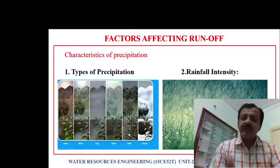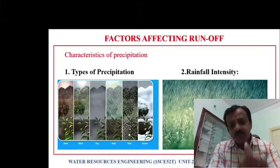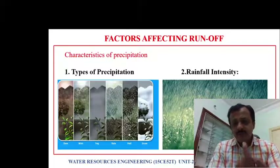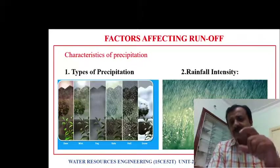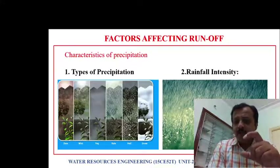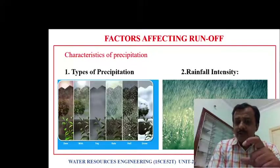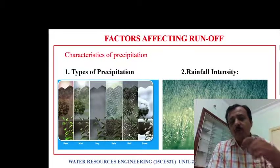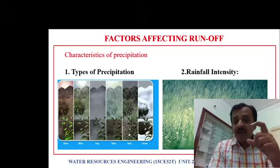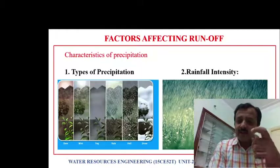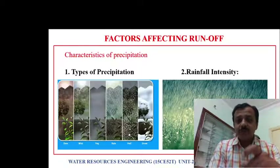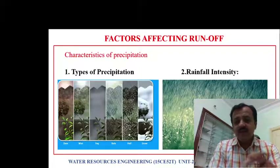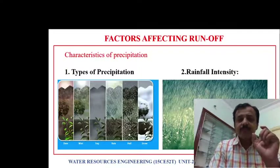Next is rainfall intensity — the depth of rainfall per unit duration, for example how much depth of rainfall occurs in one hour. More the rainfall intensity, more will be the runoff. Less the rainfall intensity, less will be the runoff. So rainfall intensity also significantly affects runoff.